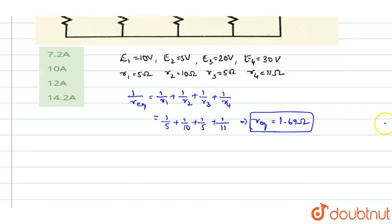Similarly, we will find the equivalent voltage. That is E equivalent by R equivalent is equal to E1 by R1 plus E2 by R2 plus E3 by R3 plus the 4th cell E4 by R4. So in this R equivalent also we have calculated. So substituting all the values, you will get it as 10 by 5 plus 5 by 10 plus 20 by 5 plus 30 by 11 into R equivalent. R equivalent is 1.69 ohms.